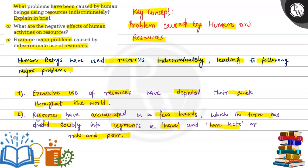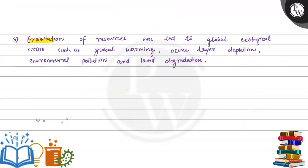Exploitation of the resources has led to global ecological crisis, such as global warming, ozone layer depletion, pollution, and land degradation.